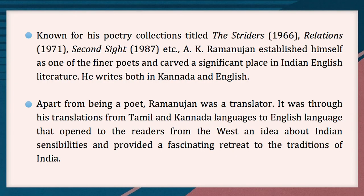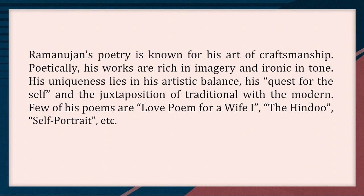Known for his poetry collections titled The Striders, Relations, Second Side, etc., A.K. Ramanujan established himself as one of the finer poets and carved a significant place in Indian English literature. He writes both in Kannada and English. Apart from being a poet, Ramanujan was a translator. It was through his translations from Tamil and Kannada to English that he opened up to Western readers an idea about Indian sensibilities and provided a fascinating retreat to the traditions of India. Ramanujan's poetry is known for his art of craftsmanship — his works are rich in imagery and ironic in tone. His uniqueness lies in his artistic balance, his quest for the self, and the juxtaposition of the traditional with the modern.